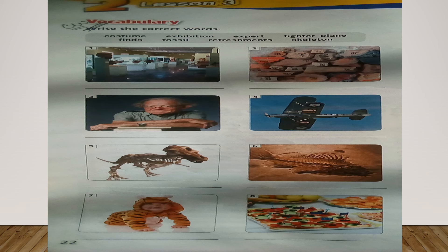Now let's write the correct words under each picture. Number 1 — exhibition. 2 — finds. Excellent. 3 — expert. 4 — fighter plane. Good job.